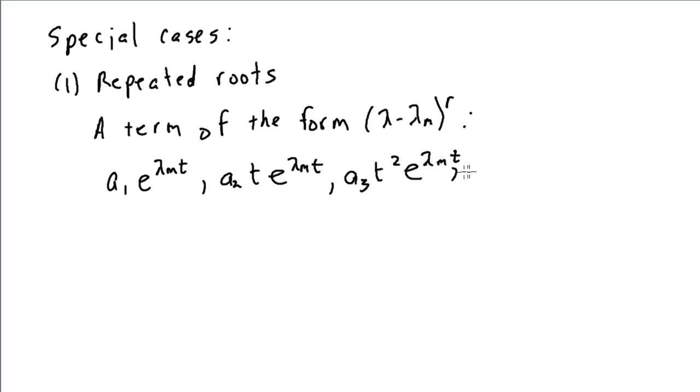And so on and so forth up until we got a r t to the r minus 1 e to the lambda m of t. It will be rare for us to work with anything beyond a simply repeated root or a lambda minus lambda m to the second power or to the third power. And then the other case to consider is if we have complex roots.